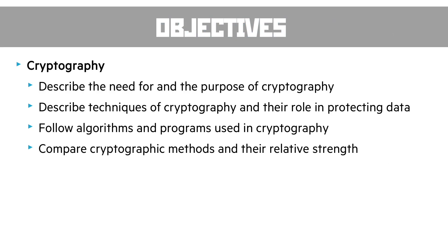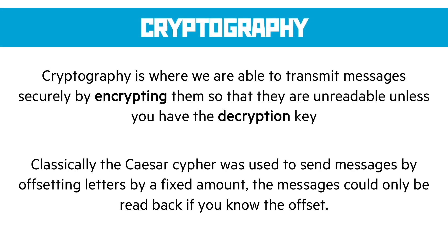The second objective is all about cryptography. This is a fascinating area of learning — we need to understand the need and purpose of it, describe some techniques and their role, follow algorithms that do it, and compare some cryptographic methods for their strength. Cryptography is where we want to transmit a message over the open internet but don't want somebody who snoops on it to be able to read it. We encrypt the message so that only the person with the decryption key can decrypt and read it — anybody who intercepts the message en route would have an unreadable mess.